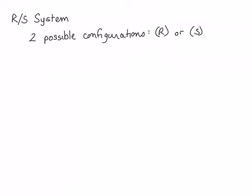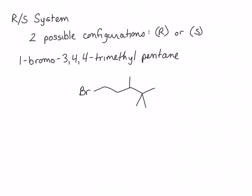First, let's consider 1-bromo-3,4,4-trimethylpentane. Pause the video and see if you can draw the structure of this compound from its IUPAC name. The structure of this compound looks like this. Now we need to identify its chiral center — the only carbon that is sp3-hybridized and contains four different groups.